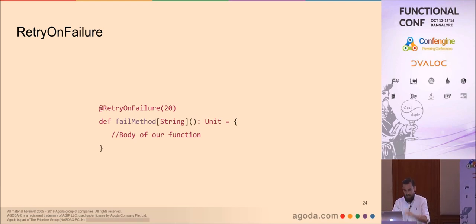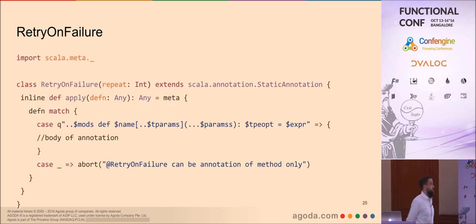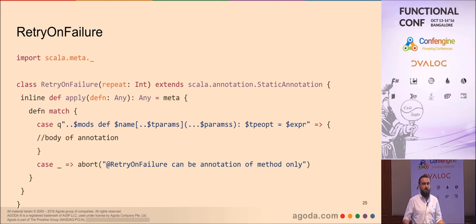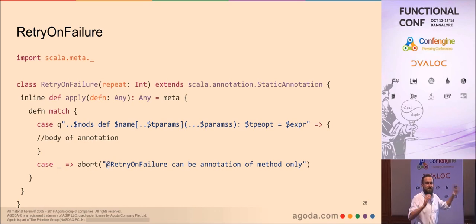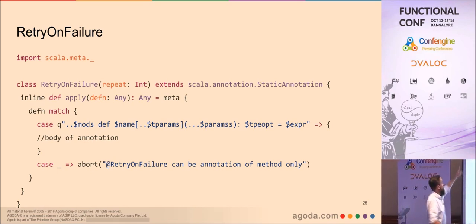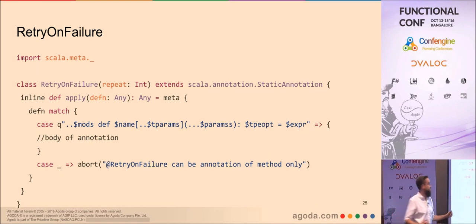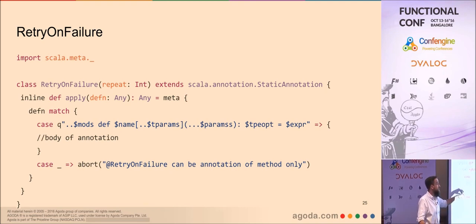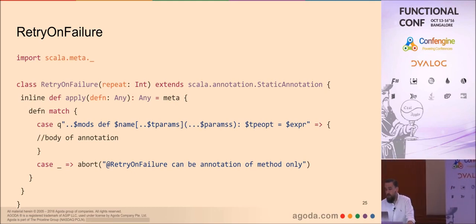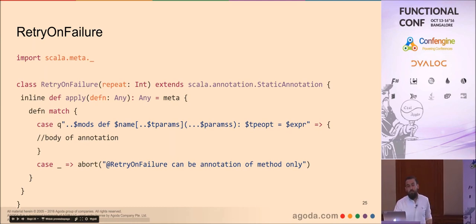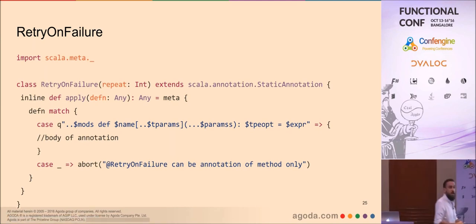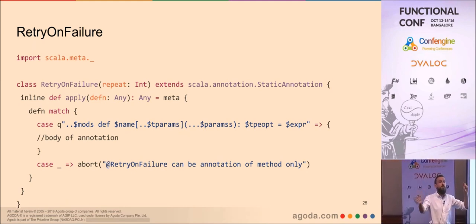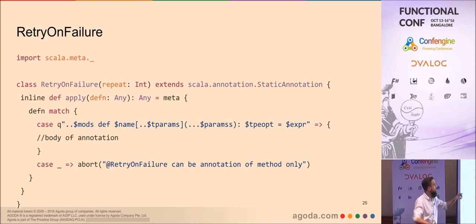Let's look at the implementation using the new macros API. First, import ScalaMeta. Then you have the definition of your annotation with a method apply. The inline keyword is new here — its goal is to signify that application of this method is replaced with the method body. It says: whatever you annotated will be inlining other code into this method. The third thing is the meta keyword, which sets boundaries where your code is enriched with metaprogramming capabilities.